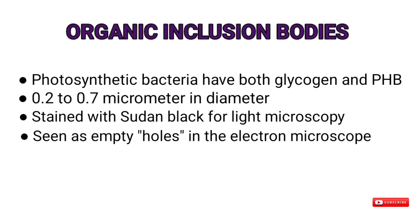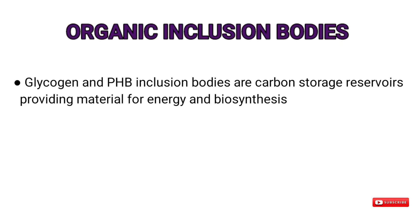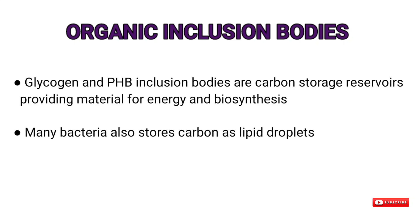PHB granules appear as empty holes in the electron microscope because the solvent used to prepare specimens dissolves these hydrophobic inclusion bodies. Glycogen is dispersed more evenly throughout the matrix as small granules and often can be seen only with the electron microscope. If cells contain a large amount of glycogen, staining with an iodine solution will turn them reddish-brown. Glycogen and PHB inclusion bodies are carbon storage reserves providing material for energy and biosynthesis. Many bacteria also store carbon as lipid droplets.